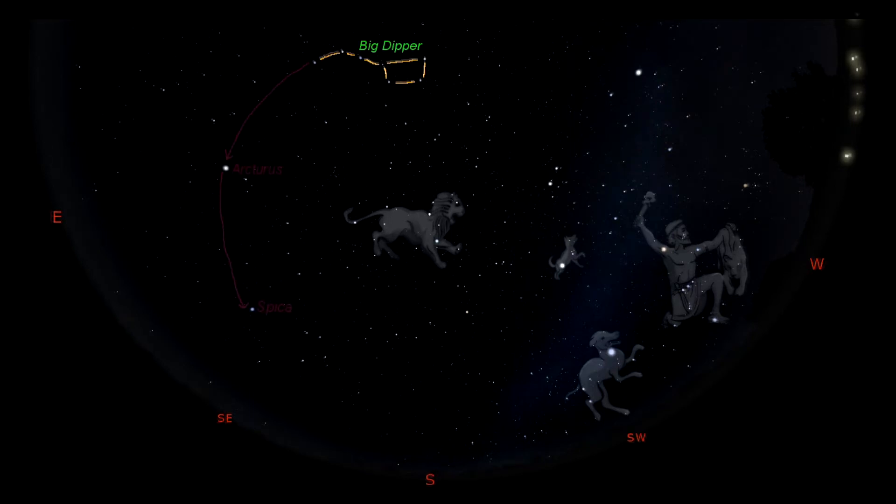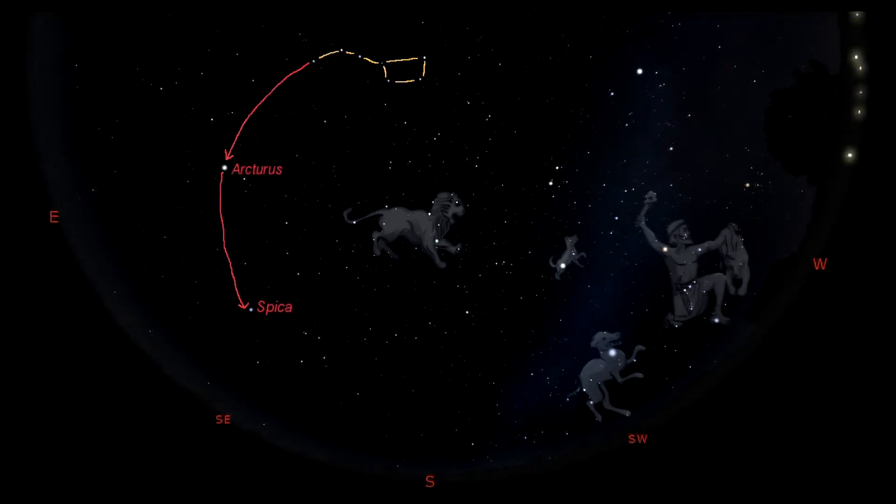That arc will lead us to the star Arcturus, and then if we continue that arc farther to the south, we come to the star Spica. The way to remember those two star names is you go from the handle of the Big Dipper, and you can arc to Arcturus, and then speed on to Spica.